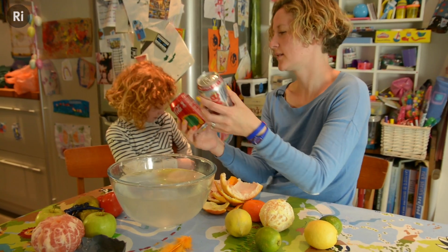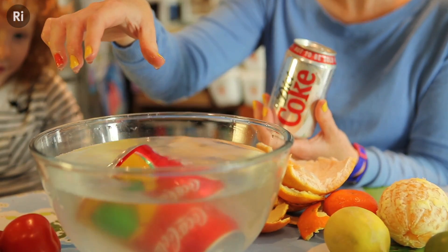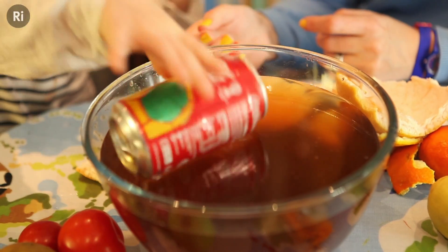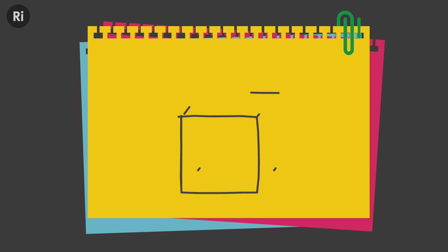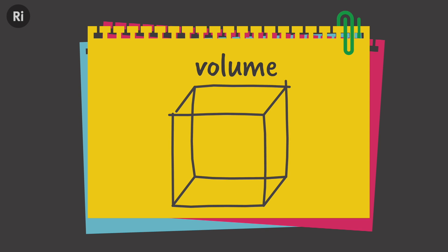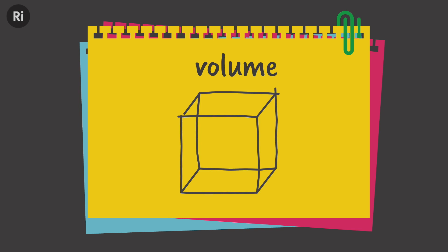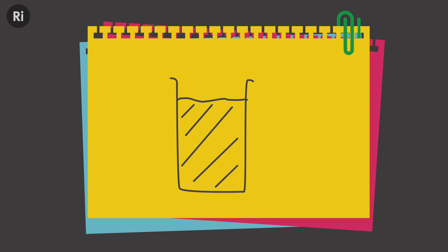Viola's right that the metal spoon is heavier than the plastic one, but it's not always the case that light things float and heavy things sink — otherwise ships and boats wouldn't float. Whether or not an object floats depends on its density, which depends on its mass and its volume. Mass is a measure of how much stuff it contains; volume is a measure of how much space it takes up.